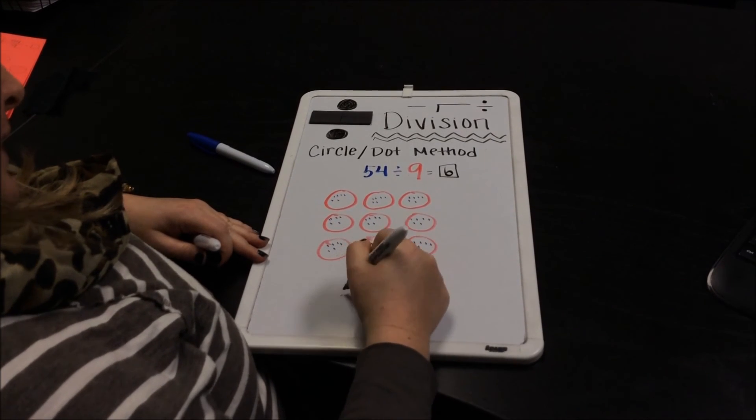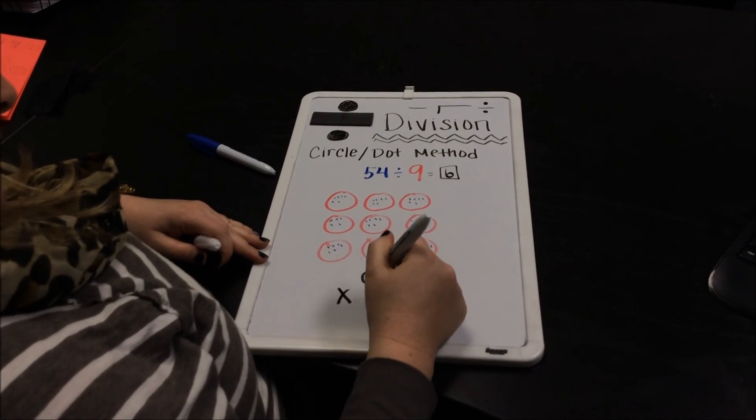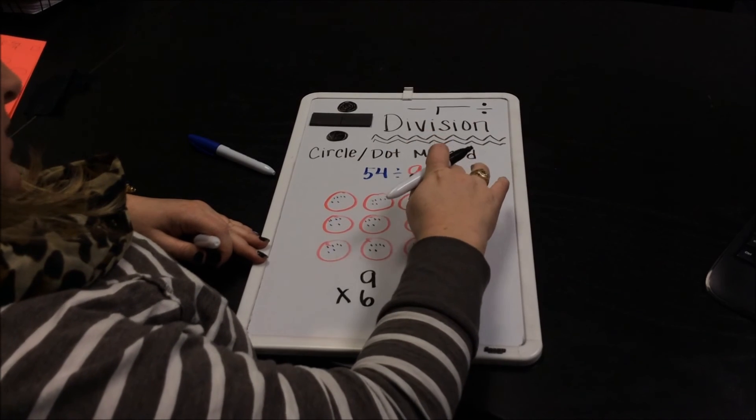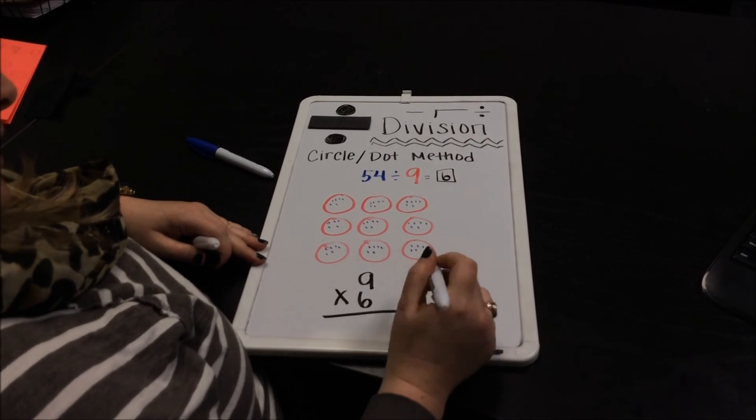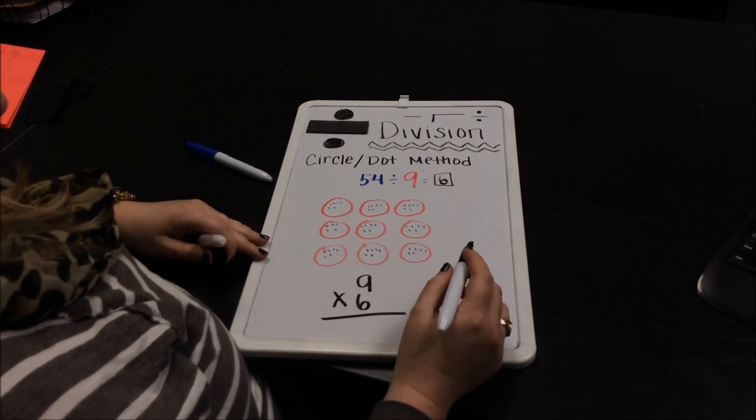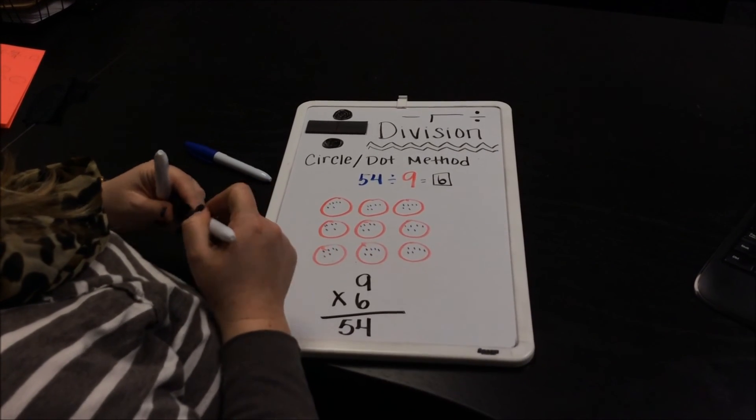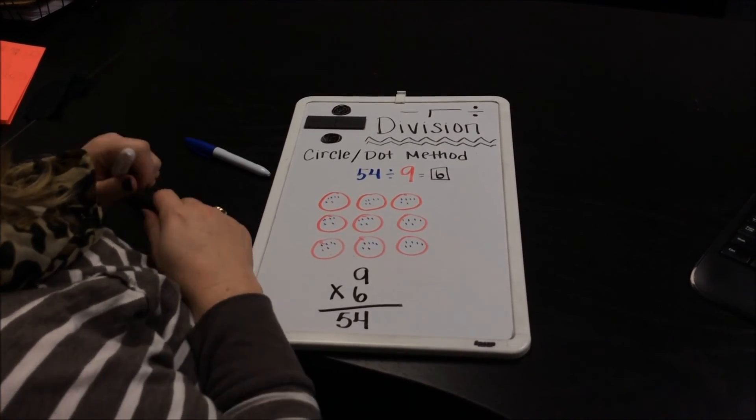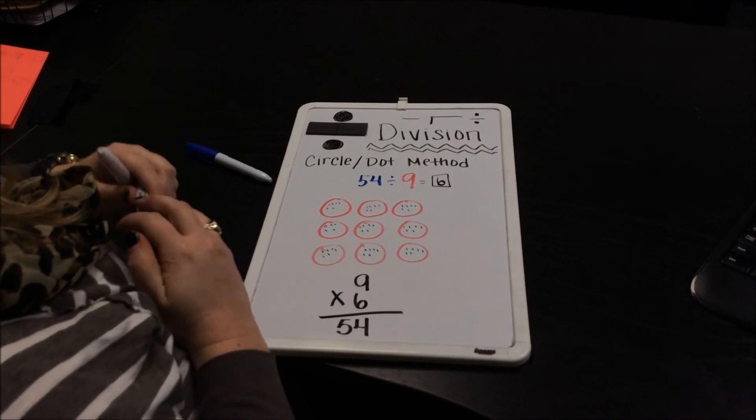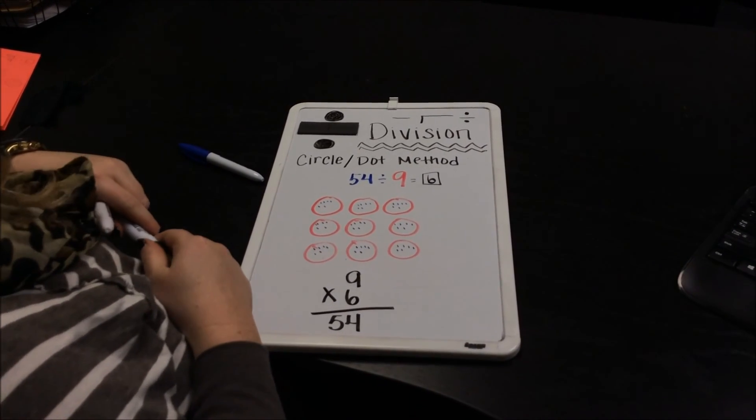So we have 9 times our quotient. Our divisor times our quotient should get us our dividend. And 9 times 6 is 54. And we've been learning that with our multiplication facts as well. So thanks for stopping by.